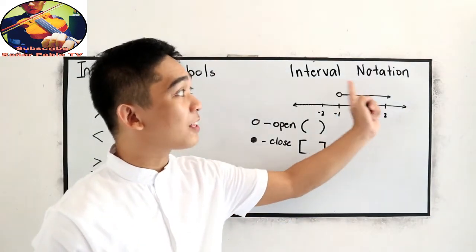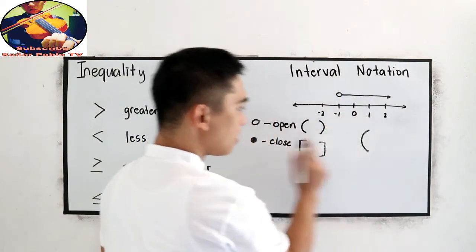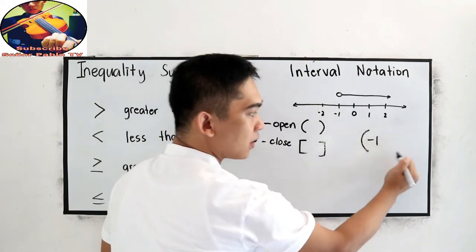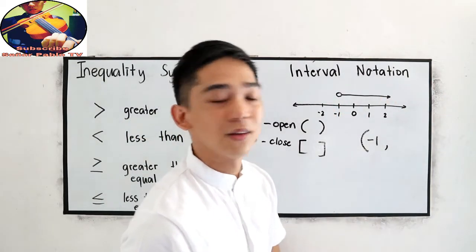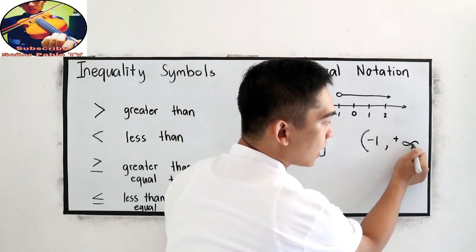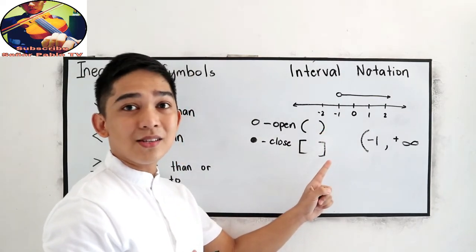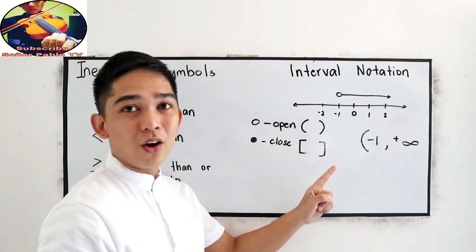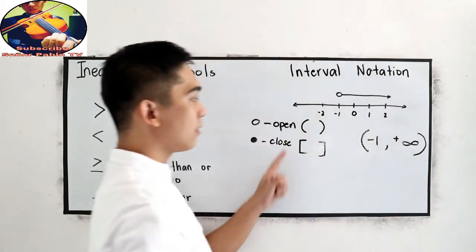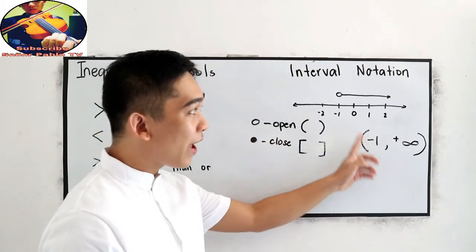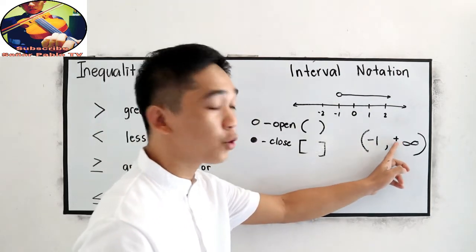Let us write this in interval notation. Open at negative 1, so we write open parenthesis and the number negative 1, comma, then going to positive infinity. Since we do not know where it ends because this is infinity, we're going to use the open symbol. That means negative 1 is not included, then going to positive infinity.